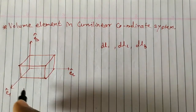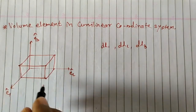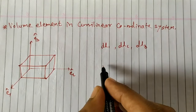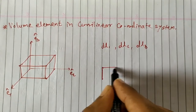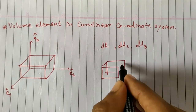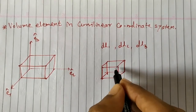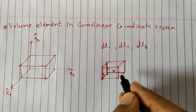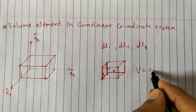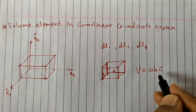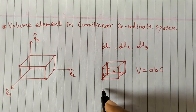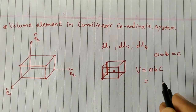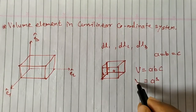I am interested in finding the volume of this parallelepiped. Usually, if a parallelepiped has sides a, b, and c, the volume is a·b·c. If all sides are equal, that is a = b = c, then it becomes the volume of a cube.